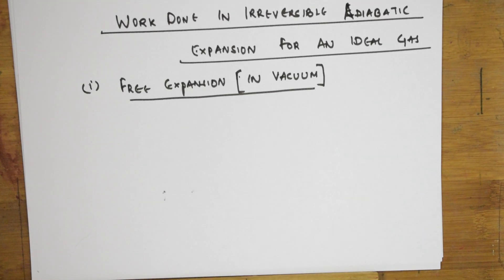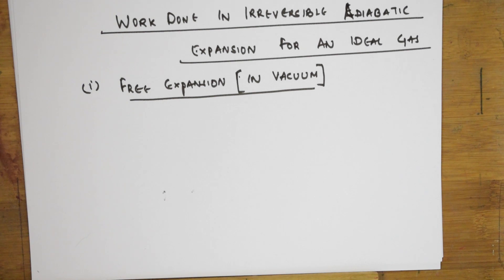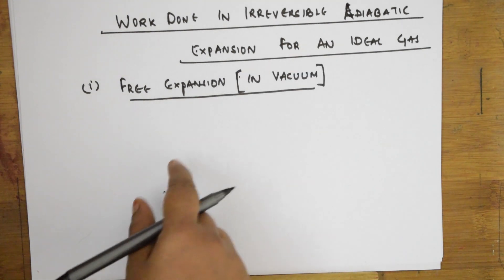Welcome students to one more session. We have already seen PV work done. We learned work done in a reversible isothermal expansion as well as work done in an isothermal irreversible expansion. Then we covered work done in a reversible adiabatic process, and we finished off with work done in an irreversible adiabatic process.